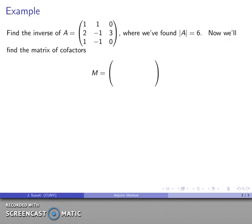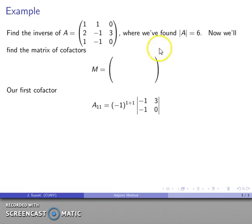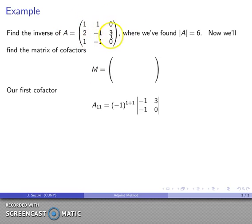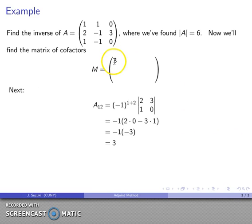Now let's find the matrix of cofactors. The (1,1) cofactor is (-1)^(1+1) times the determinant of the minor — eliminate row 1 and column 1, leaving a 2×2 matrix — and after all the dust settles, that determinant is 3. Note the key difference: unlike expanding for det(A), the matrix entry itself does not appear in this cofactor expression.